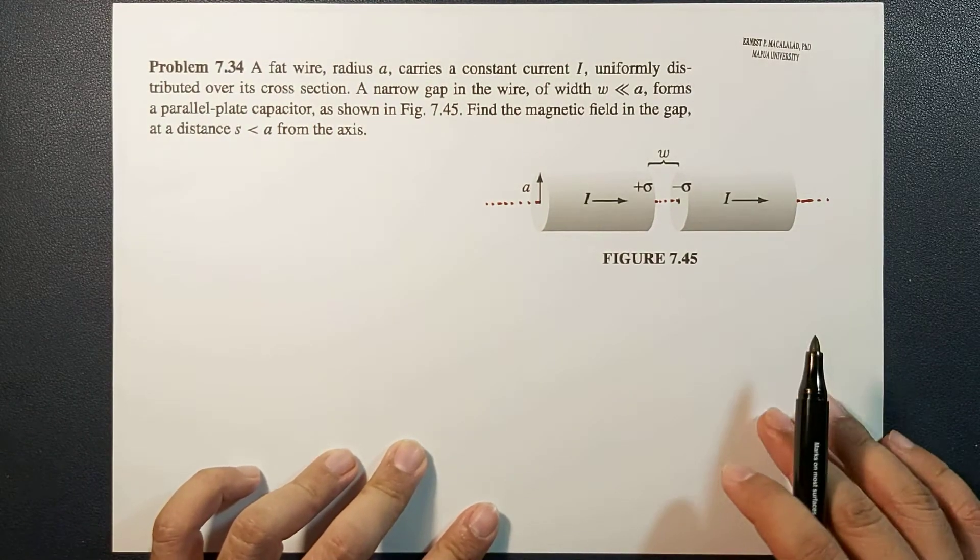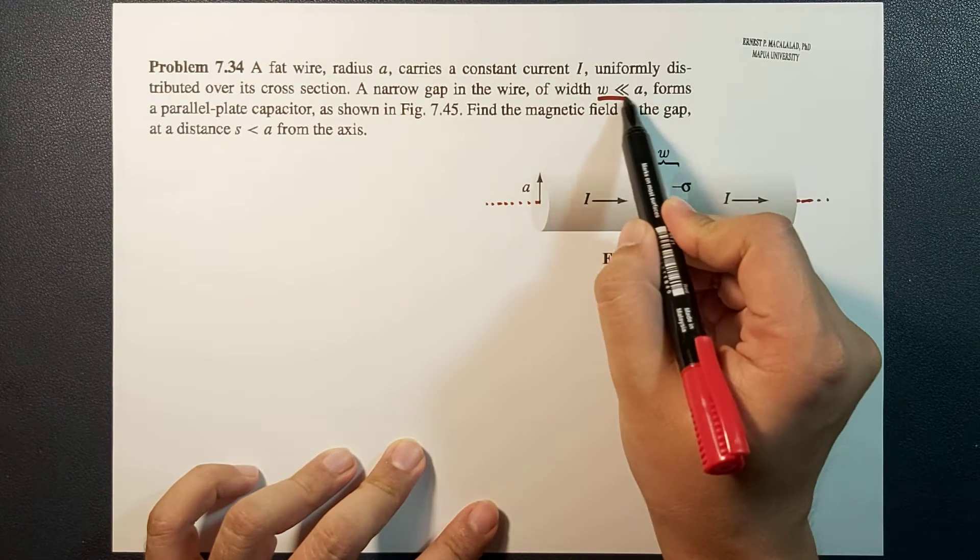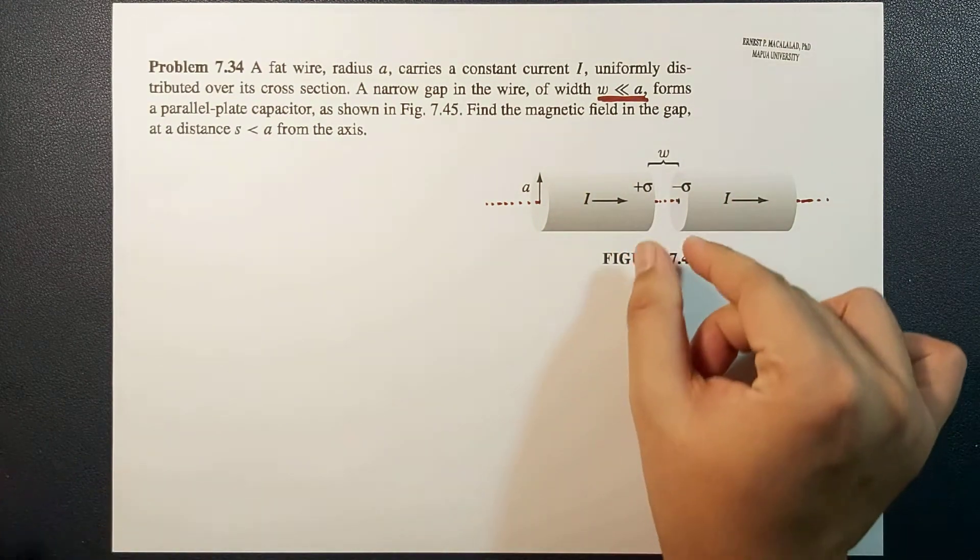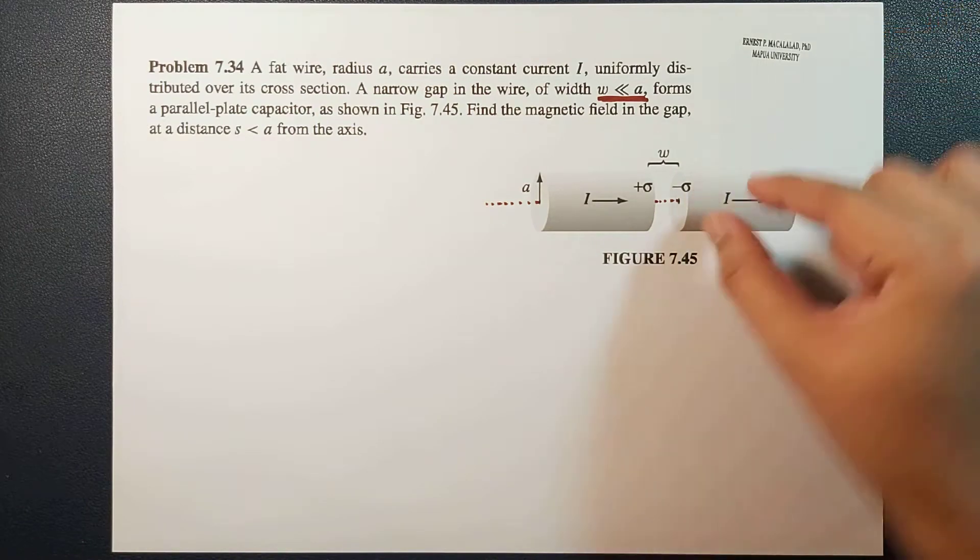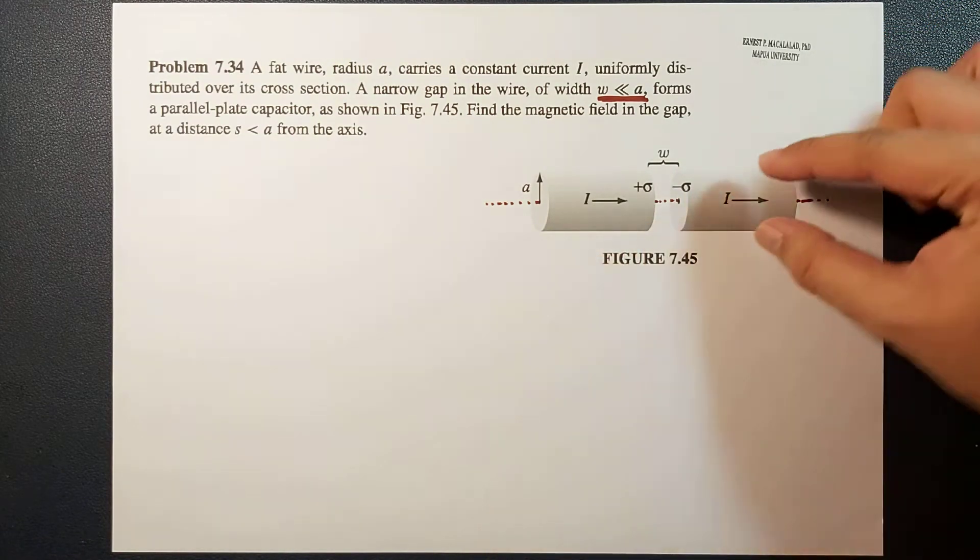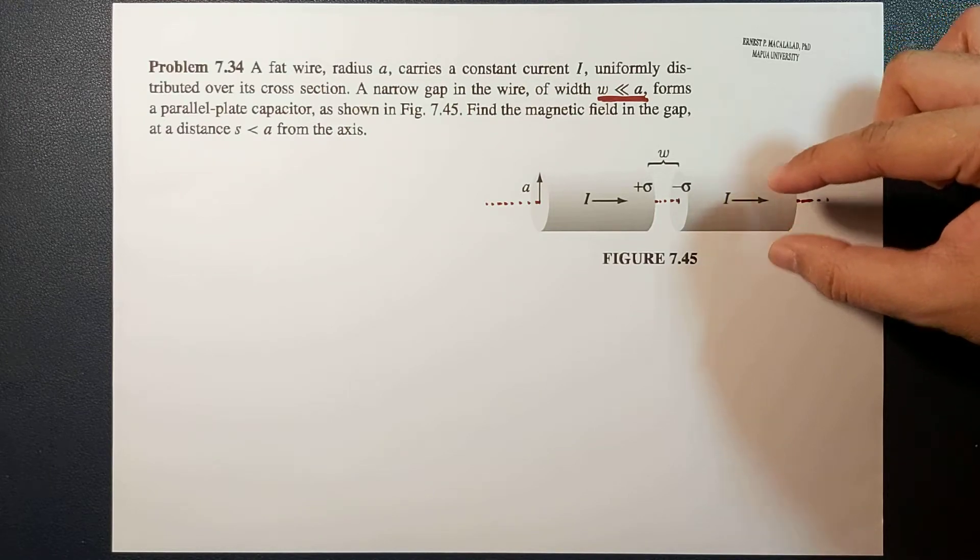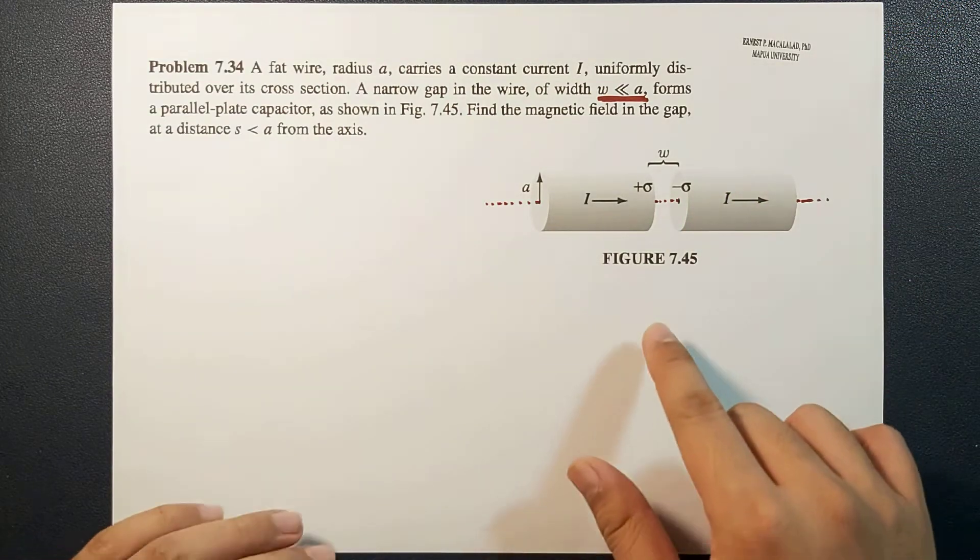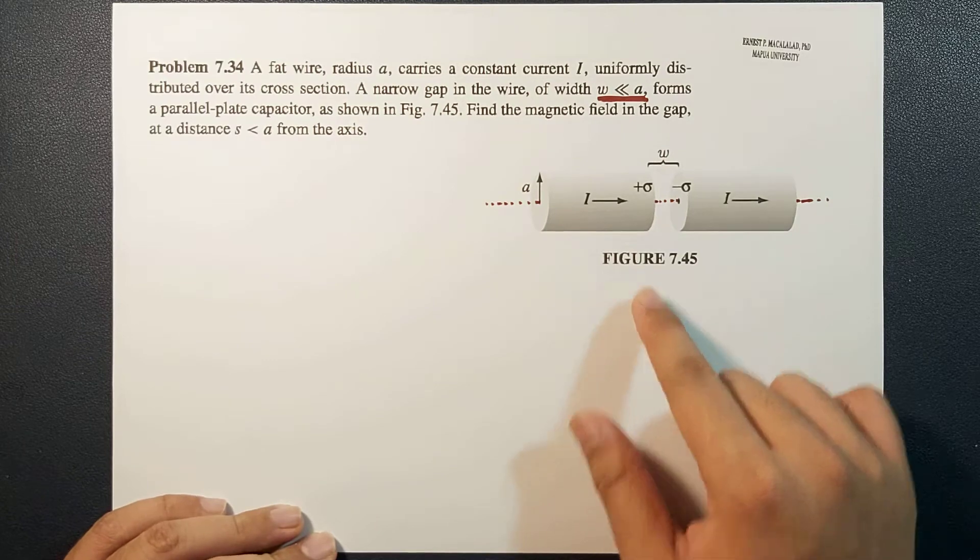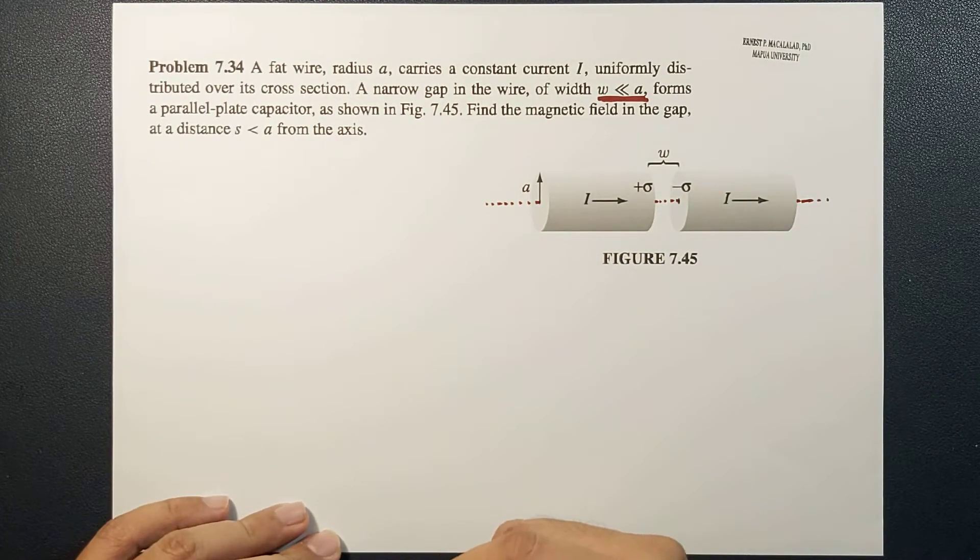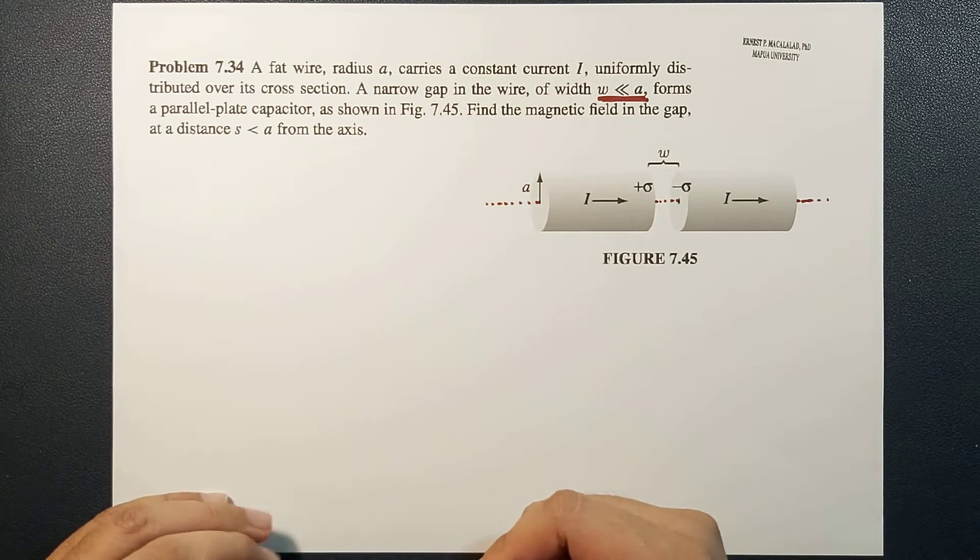Okay, so because of this condition wherein the gap is very small compared to the radius of the wire, that means the fringe effects at the edges of the wire, meaning the edges of the plates, will be negligible.